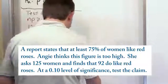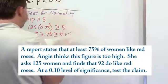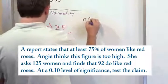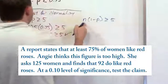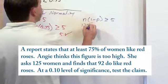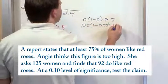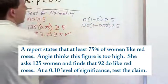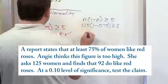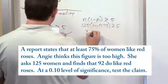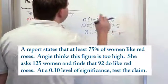Now the other test that we have to pass, we have to pass both of them to be able to use the normal distribution, is n times 1 minus P greater than or equal to 5. So in this case, we asked 125 women, 1 minus P, which is 0.75 greater than or equal to 5. So you know 1 minus 0.75 is 0.25. When you multiply that by 125, you get 31.25 and that is greater than or equal to 5. So that is verified as well.